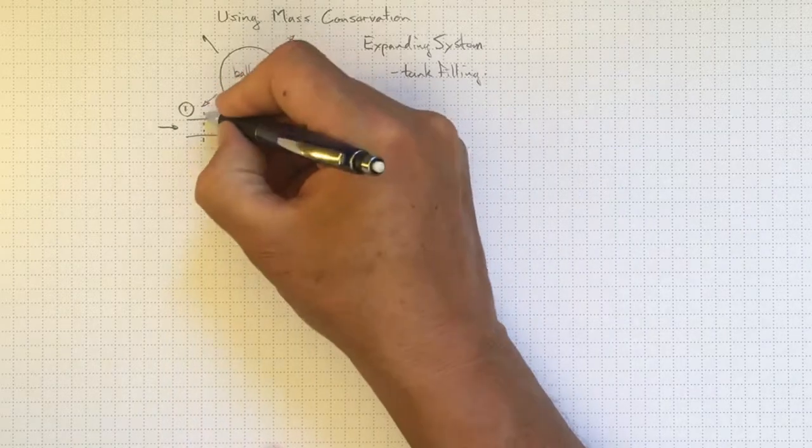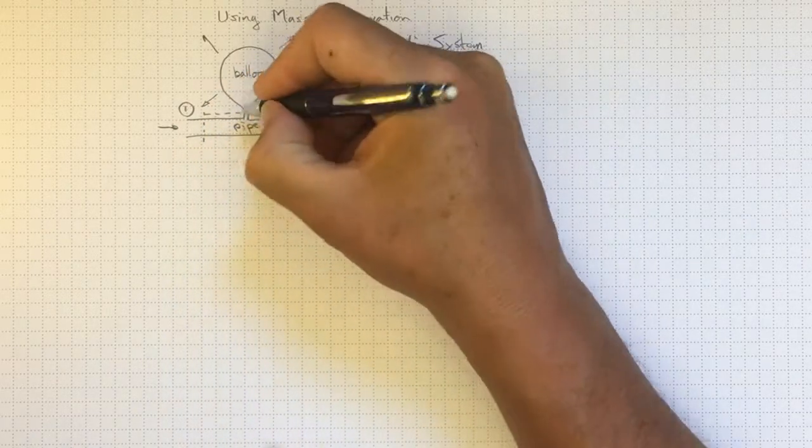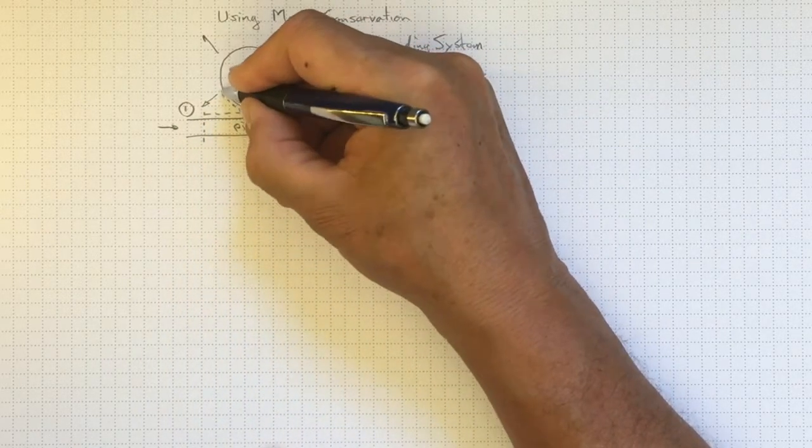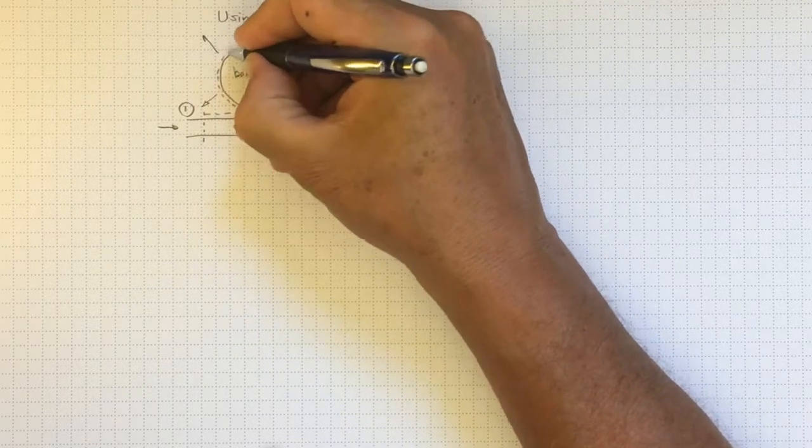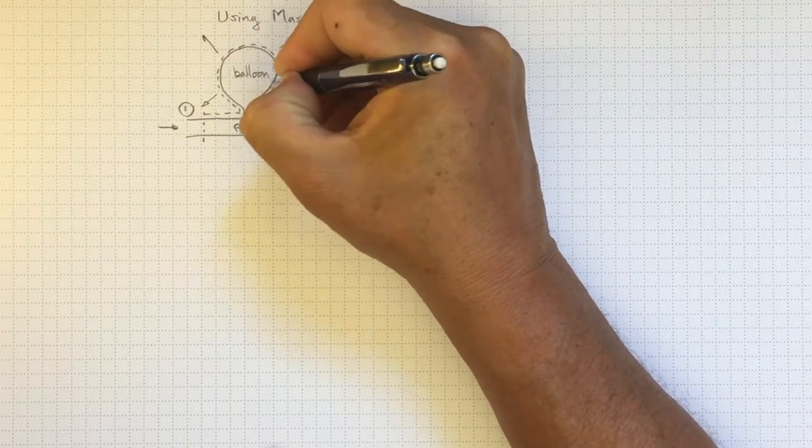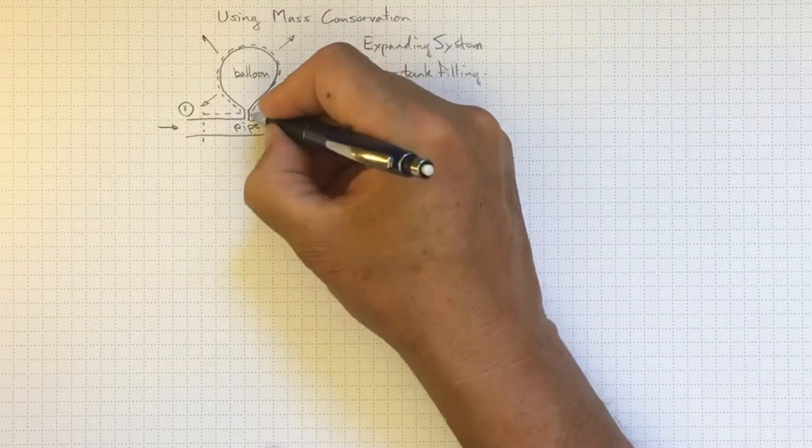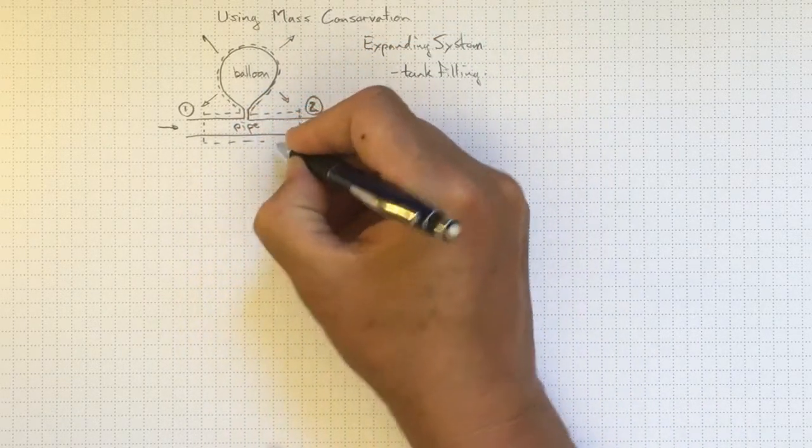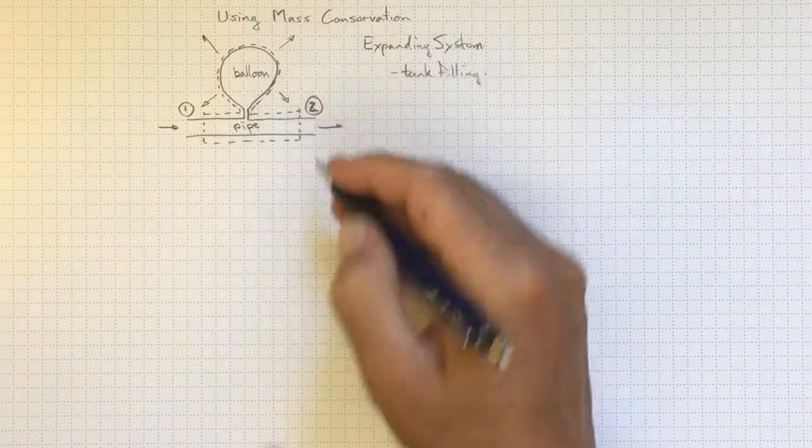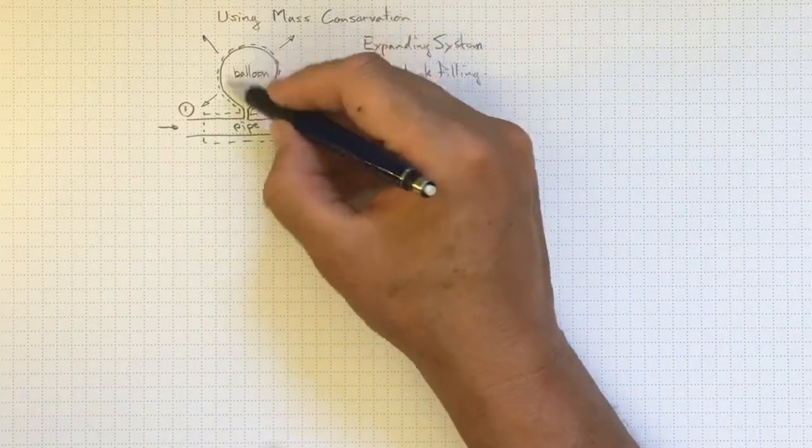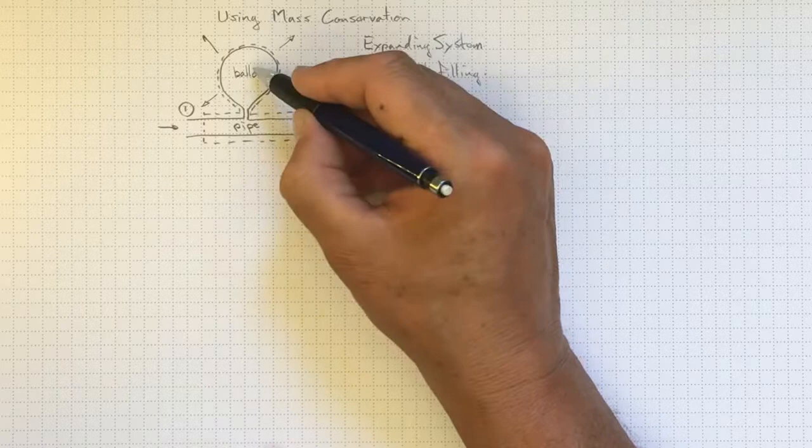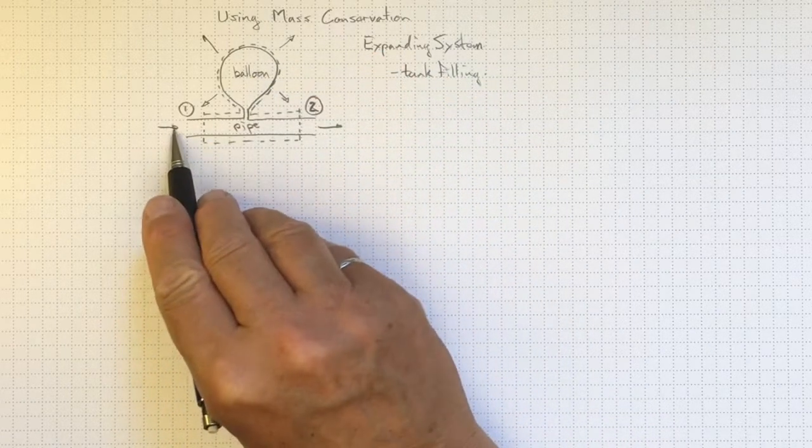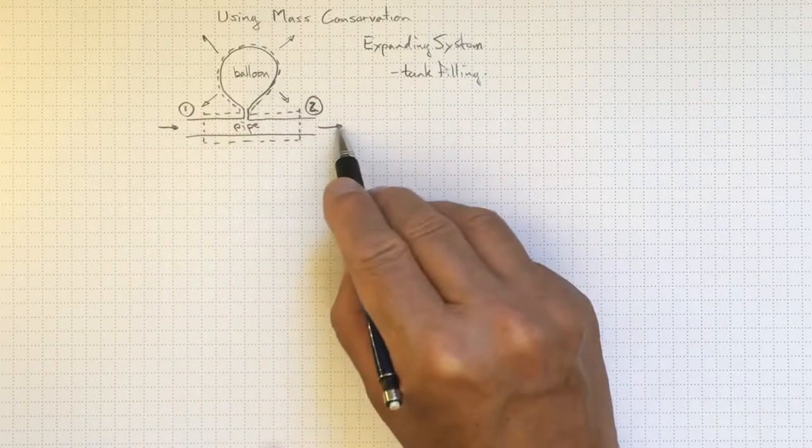And let's likewise draw our control volume boundaries so that they're just outside the balloon so that our control volume expands with the balloon. And I'll complete the control volume down here. So now we've got stuff being stored inside the control volume based on the difference between what comes in at location one and what goes out at location two.